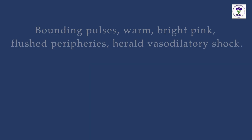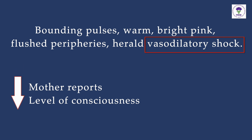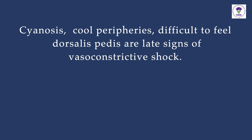In summary, bounding pulses and warm, bright pink, flushed peripheries herald vasodilatory shock if the mother reports a drop in the level of consciousness and the other parts of the triangle are abnormal. Cyanosis, cool peripheries, and a difficult-to-feel dorsalis pedis are late signs of vasoconstrictive shock.